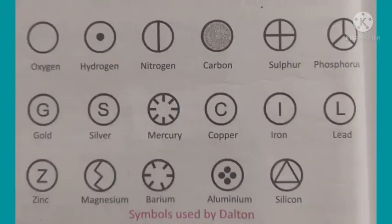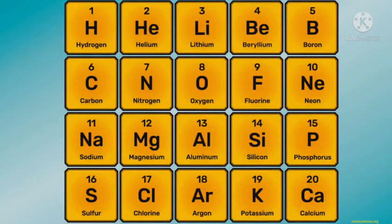But as the number of known elements increased, this method too became very tedious. To overcome this, abbreviations are used to represent elements, and these abbreviations are called chemical symbols.